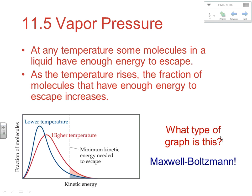One of the key ideas we can also look at with this diagram is this line right here. In order to break away, you have to overcome the intermolecular forces of the neighboring molecules, so you need a certain minimum kinetic energy to do that. When the temperature increases — the red situation — we have a higher fraction of particles with enough energy to break away and escape, so our evaporation rate increases.